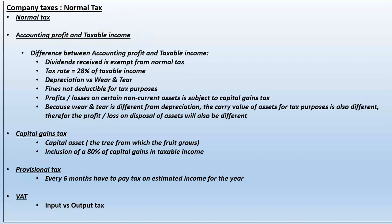There is a difference between accounting profit and taxable income because the receiver of revenue does not always follow the same rules, calculations, and methodology that we use in accounting. For tax purposes, certain income that we recognize is tax-free. Dividends received, for instance, is exempt from normal tax — meaning you do not pay normal tax on dividends that you receive. The tax rate is 28 percent, not of the accounting profit, but of taxable income.